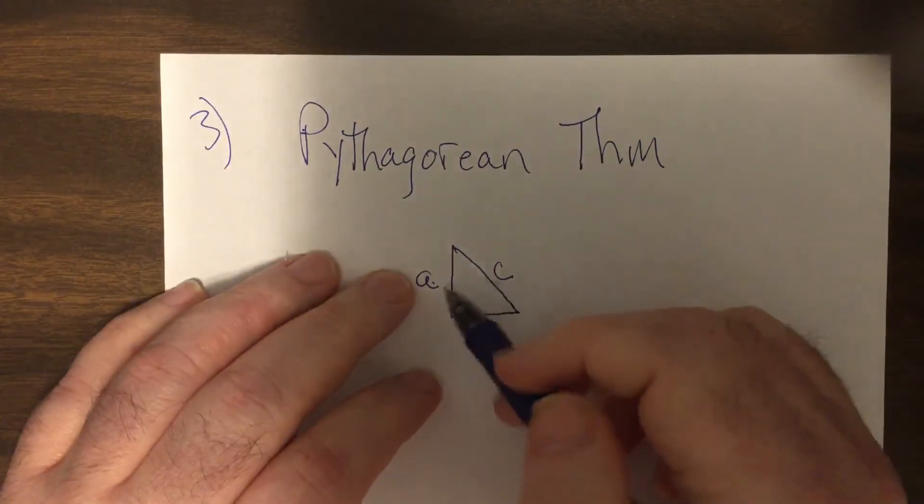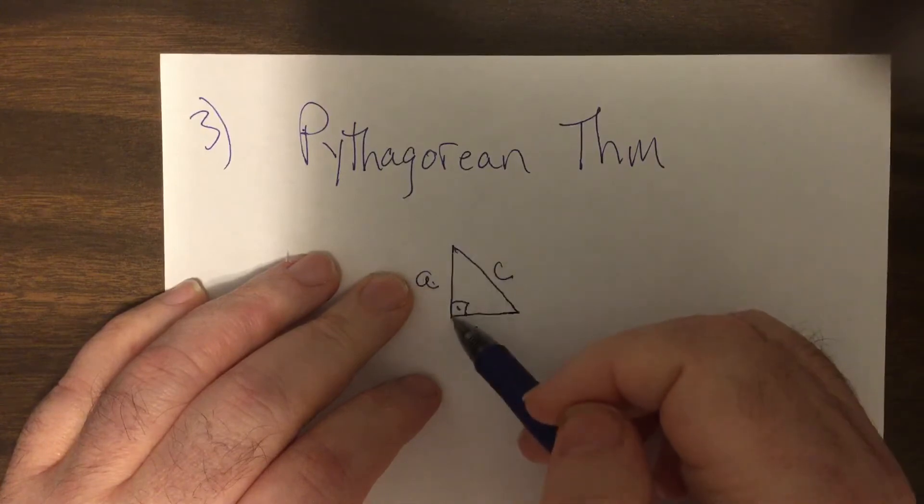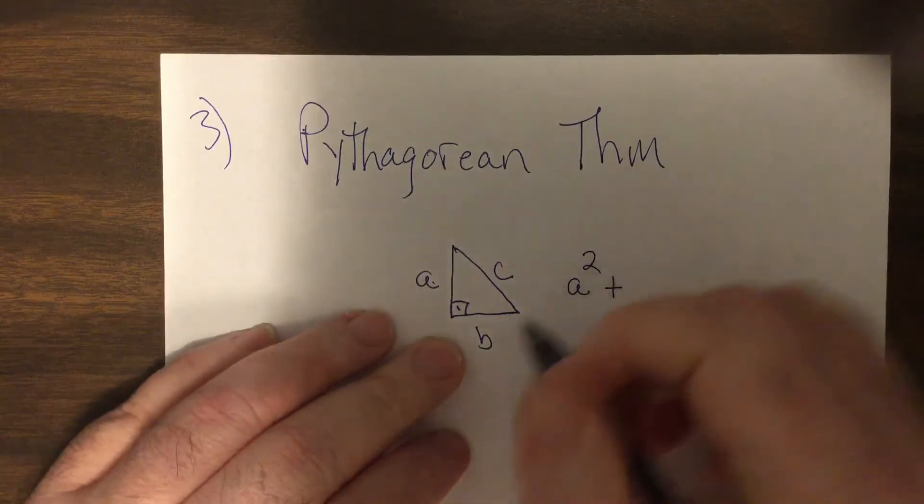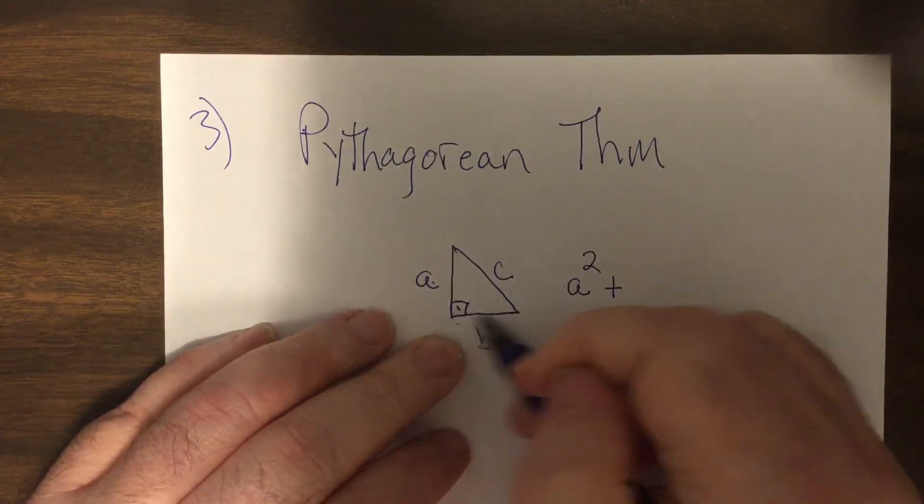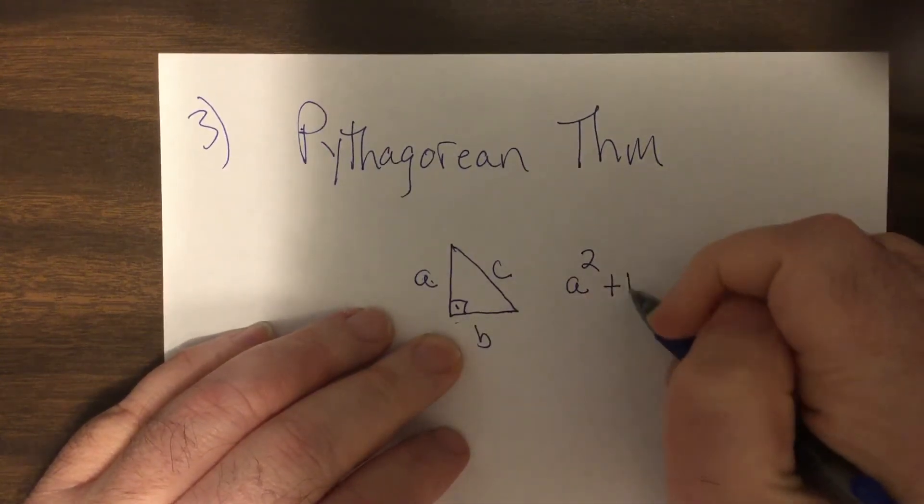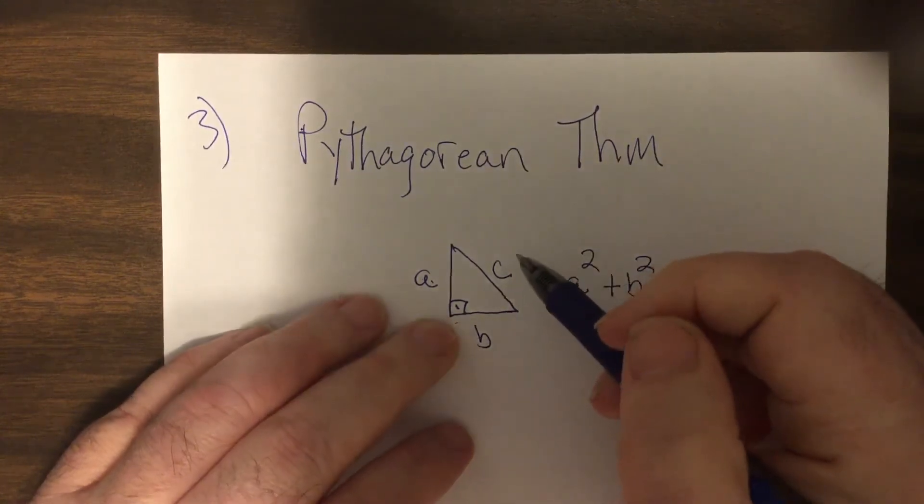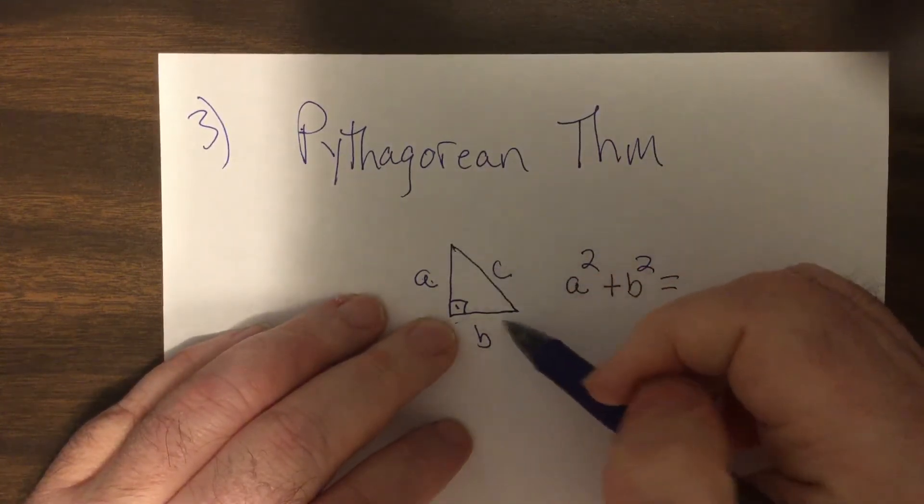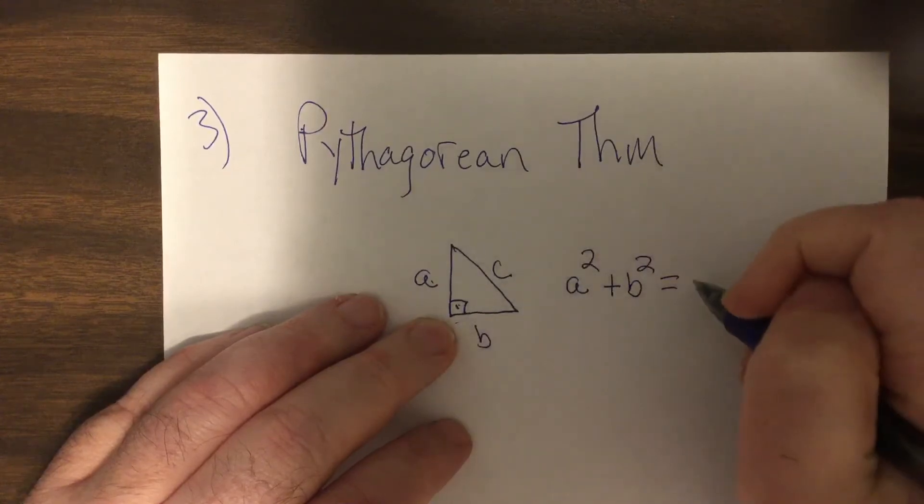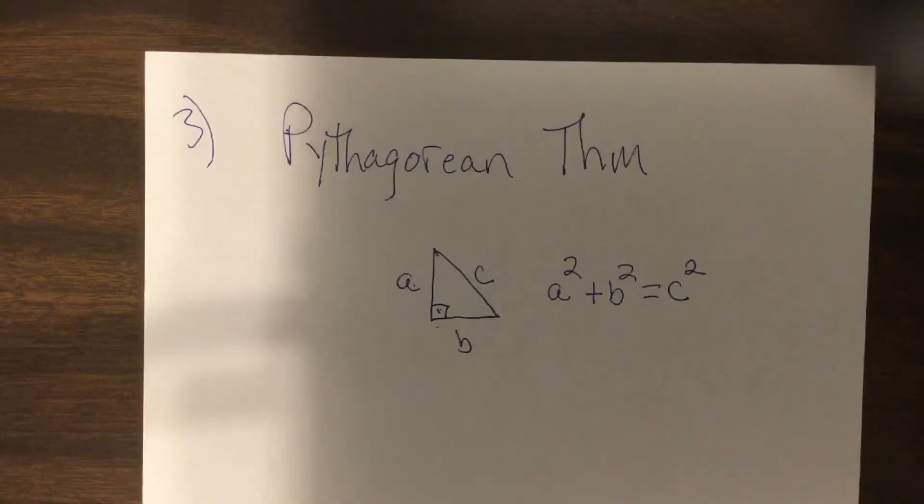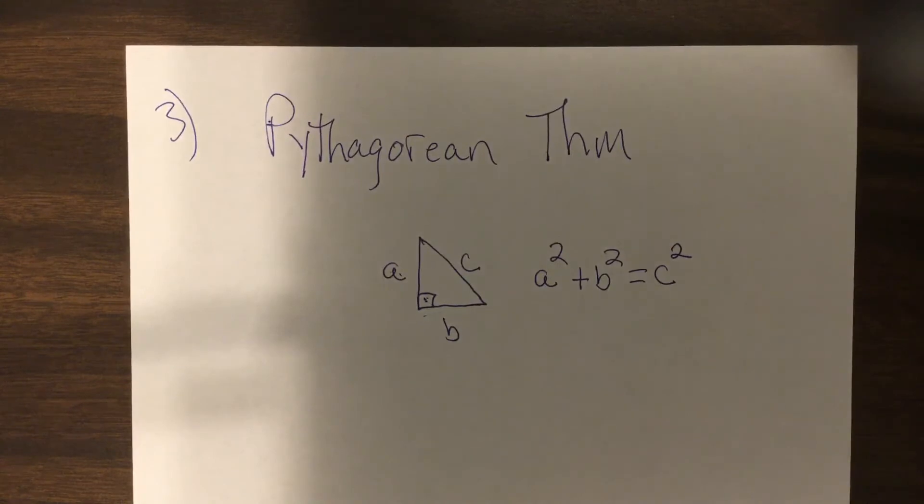What it says is when you take the square of the leg (the leg is the side of the right angle) plus the square of the other leg, that will always equal the hypotenuse squared. The hypotenuse is the side opposite the right angle. We can use it in two ways: to find missing sides, and to determine if a triangle is a right triangle.